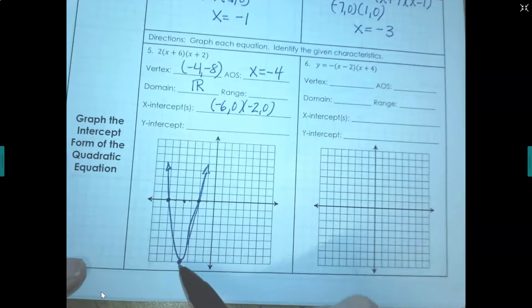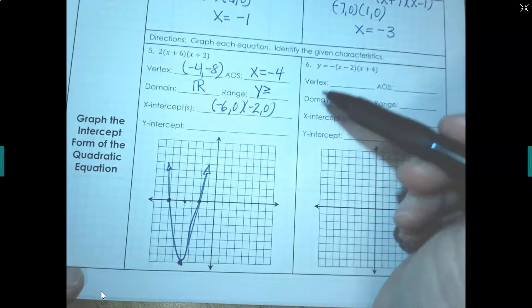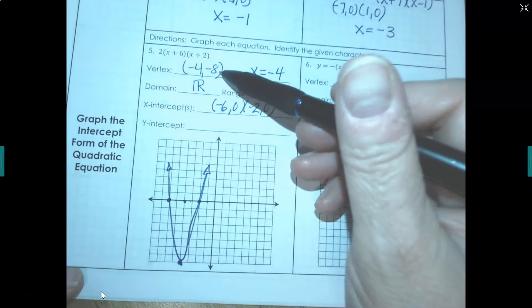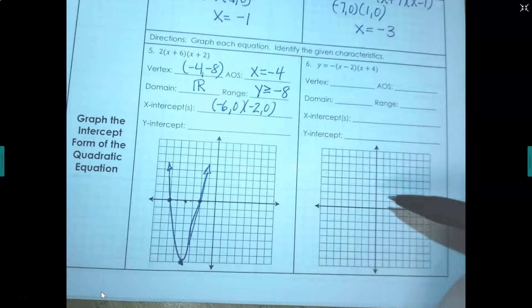For our range, how does the graph compare to the vertex? The graph is above the vertex so you know it's going to be greater than or equal to. And so what is that y value there? That y value there is negative 8. So all of the graph is greater than negative 8.